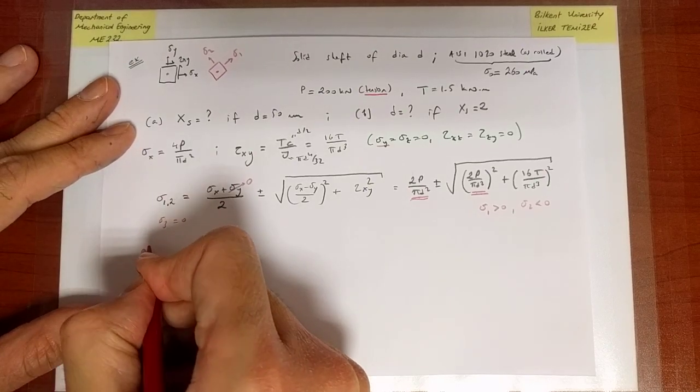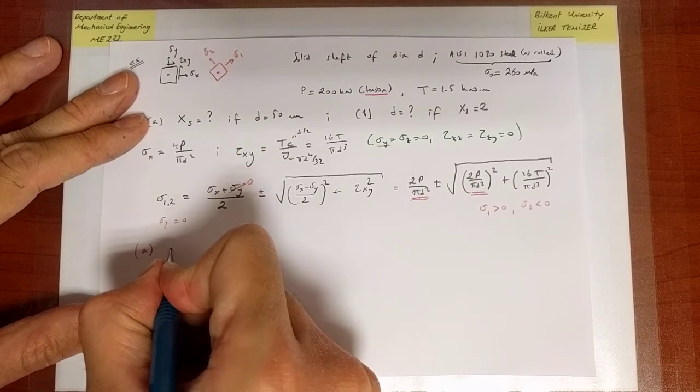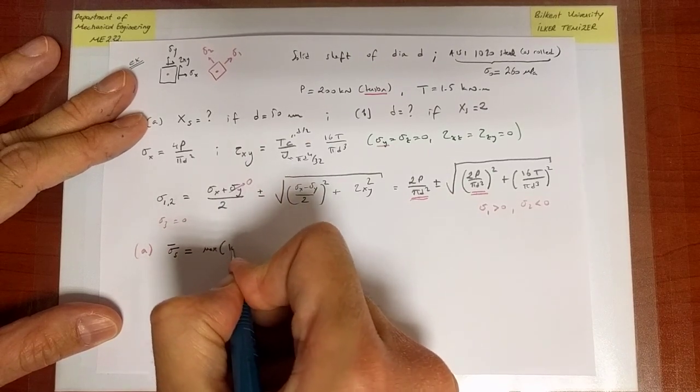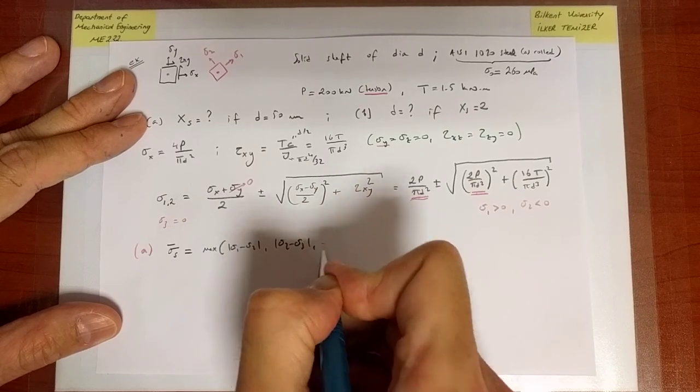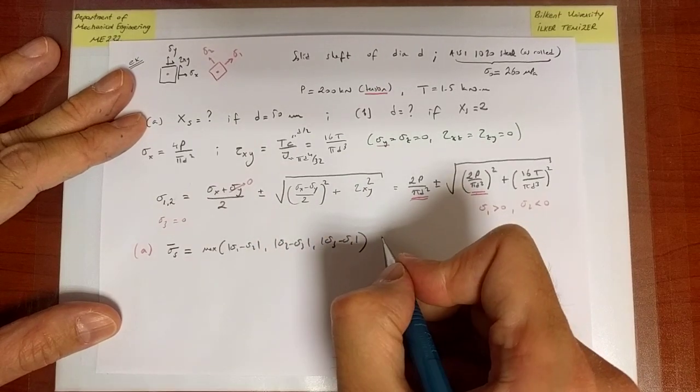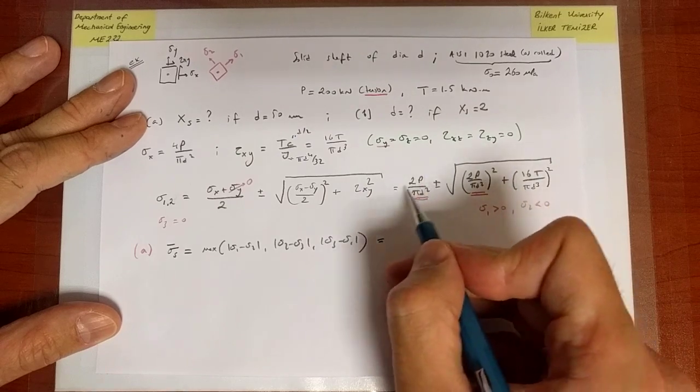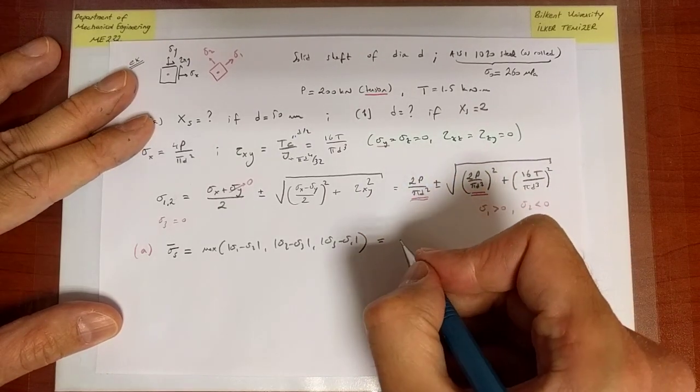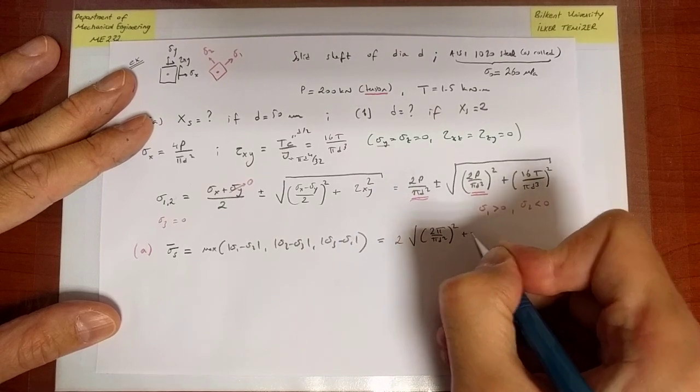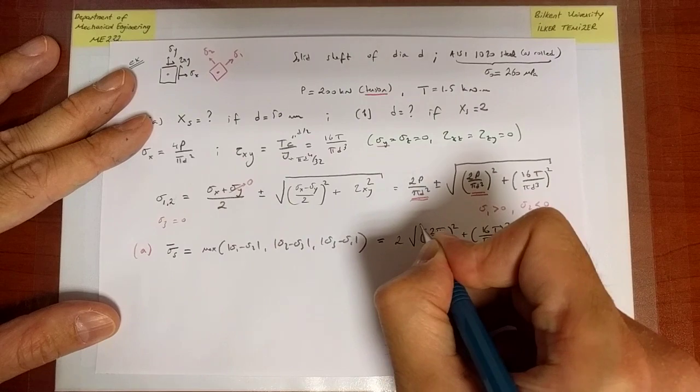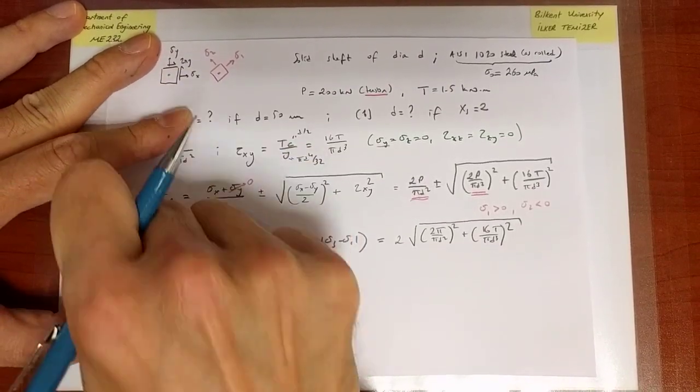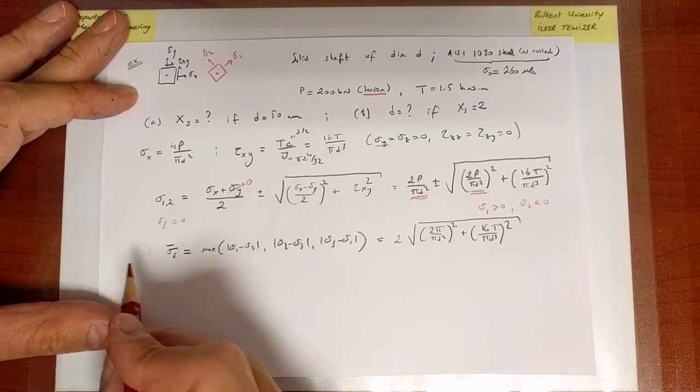When I look at the Tresca criterion, let's therefore now go to part A. If I want to evaluate the Tresca criterion, I will try to calculate the effective stress, normal stress, which is the max of sigma 1 minus sigma 2, sigma 2 minus sigma 3, sigma 3 minus sigma 1. Sigma 3 is 0, and 1 minus 2 is larger than everything else, and therefore the result is sigma 1 minus sigma 2. So when I subtract that term cancels and I get twice that value. So it's equal to 2 square root of 2P over pi d squared squared plus 16T over pi d cubed squared. In fact that applies both to part A and B, so let's just write that as a general piece of information and now proceed to part A.